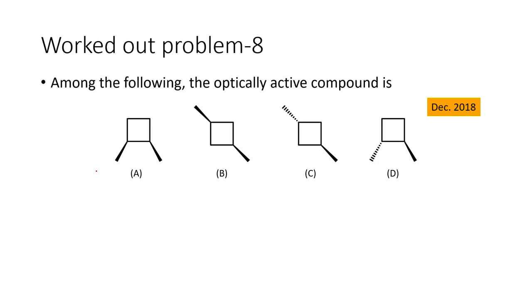In this problem we are going to see which among the following is the optically active compound. We are given four different compounds and must find out which one is optically active. By looking at them directly we cannot say, so let us go into the three-dimensional structure to see how the molecule actually exists — that makes it much easier to visualize and answer the question.